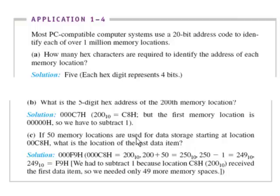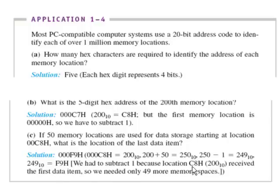Part C: if 50 memory locations are used for data storage starting at location C8, what is the location of the last data item? The answer is F9. I took C8, which is the number 200, and added 50 to get the 250th location — but you subtract one, so the answer is 249. When you convert 249, that's F9. We subtracted one because location C8 received the first data item, so we only needed 49 more memory spaces. This is one of the tricky parts: where does memory start and end — do you subtract one or add one?